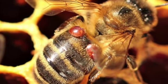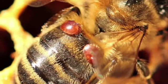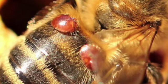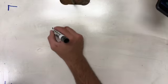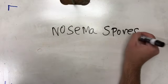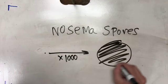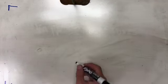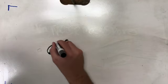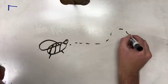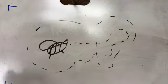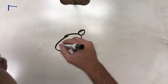Nosema damages honey bee health because it is a gut parasite that can cause bees to suffer dysentery. The spores damage honey bee health because spores are inhaled by the bees and affect their digestive tract.